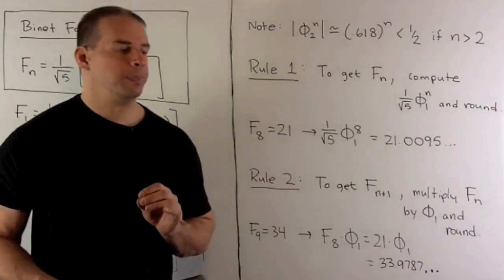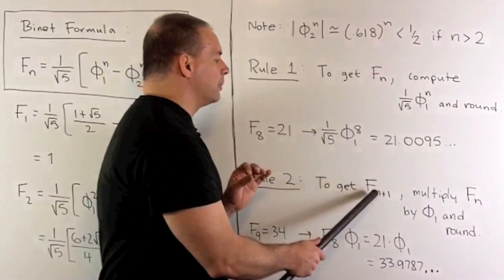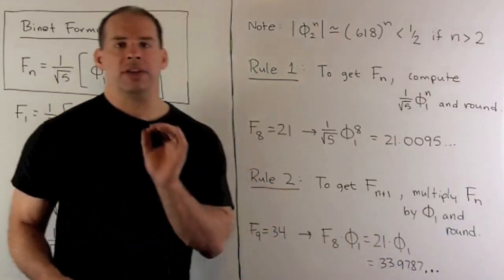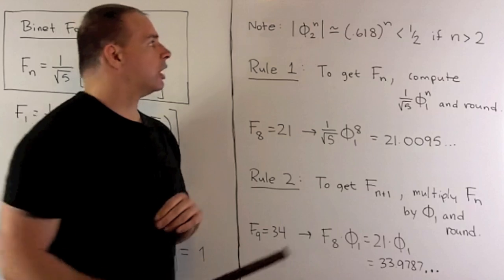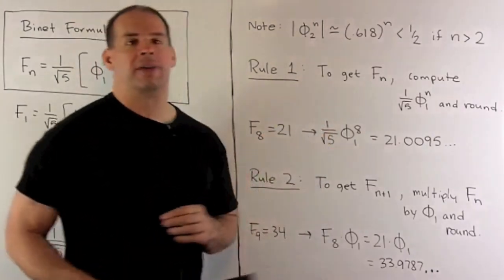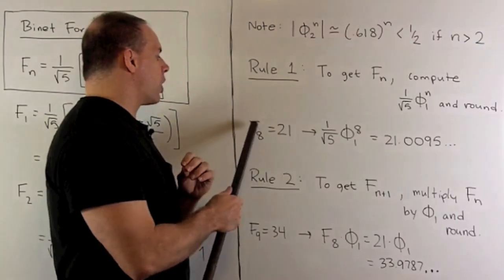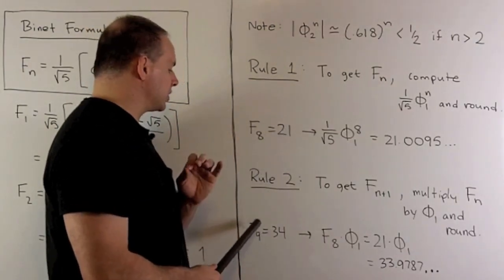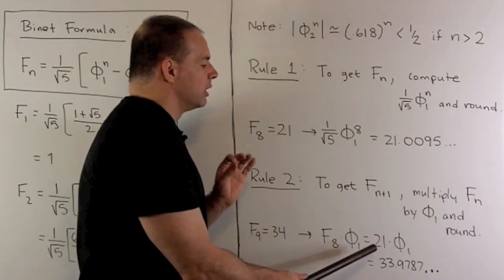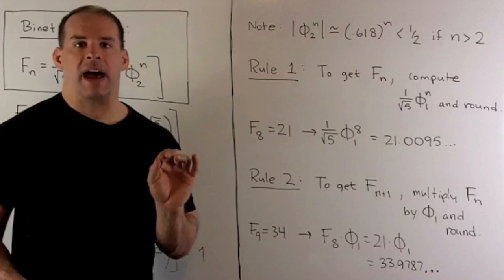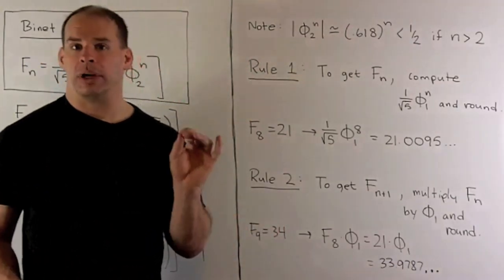Another rule: if n is out a little bit, to get F sub n+1 from F sub n, all I need to do is multiply by phi1 and round. You can ignore the effect of phi2. Starting with F sub 8 equal to 21, I want to get F sub 9 equal to 34. I take F sub 8 times phi1 — that's 21 times phi1 — and I get 33.9787, so we're pretty close.